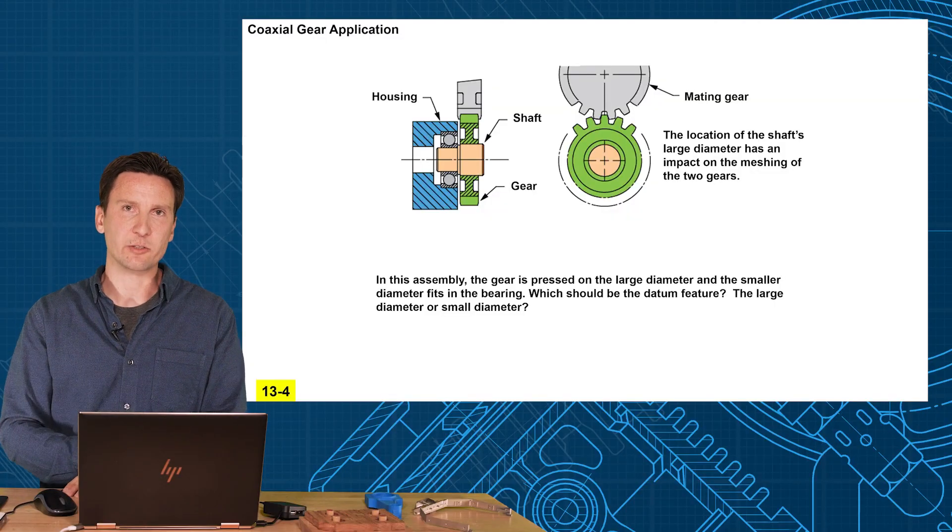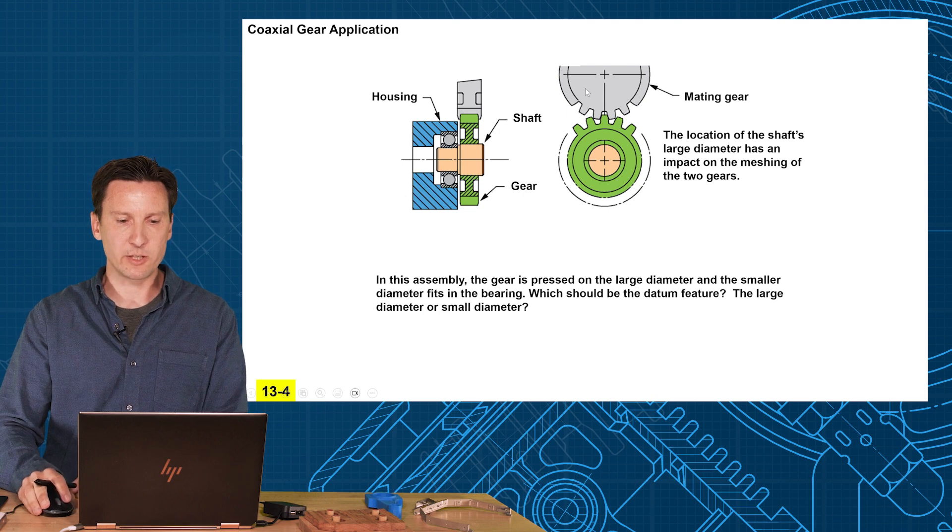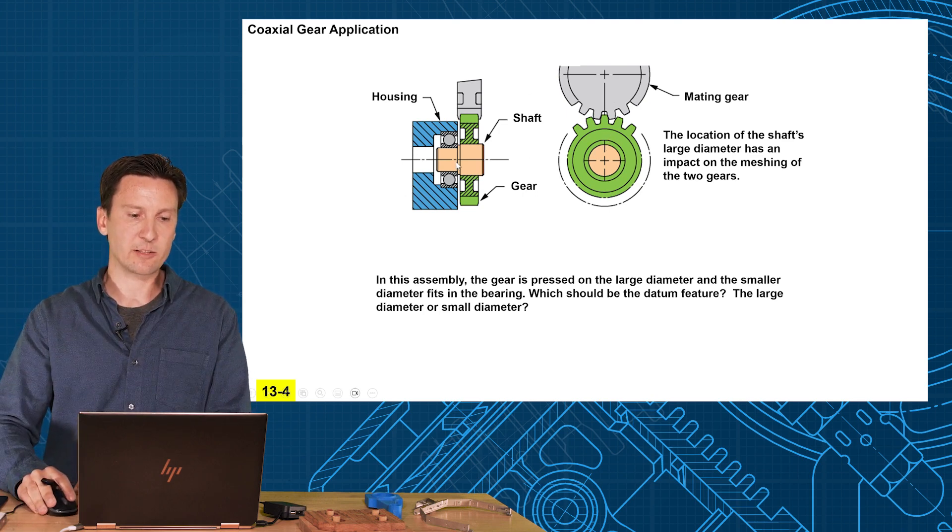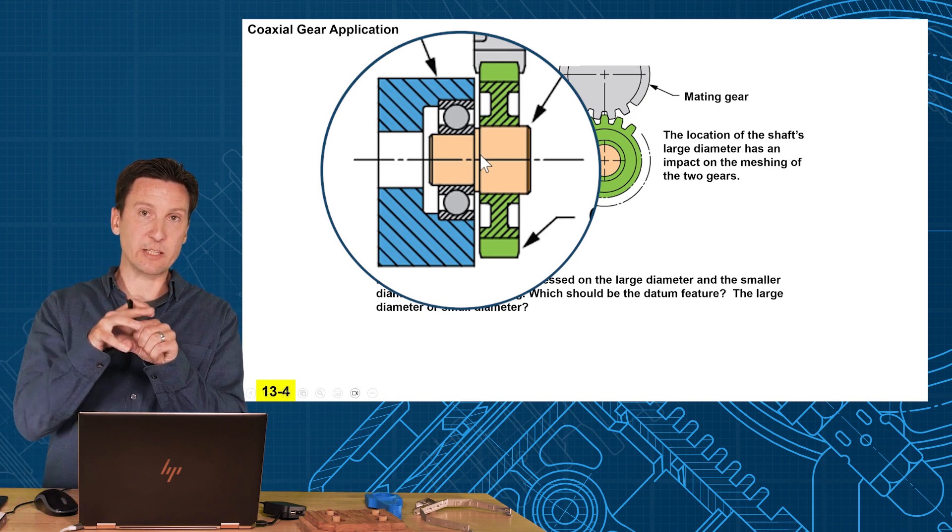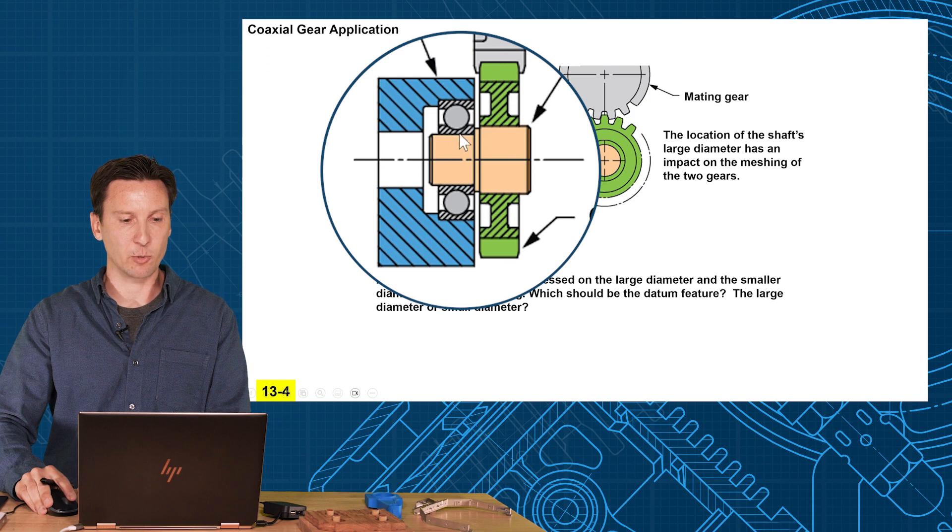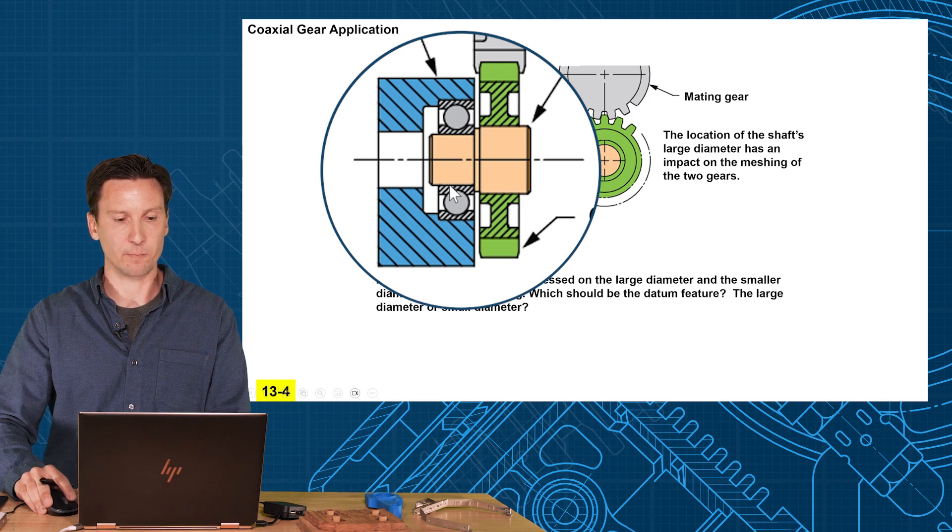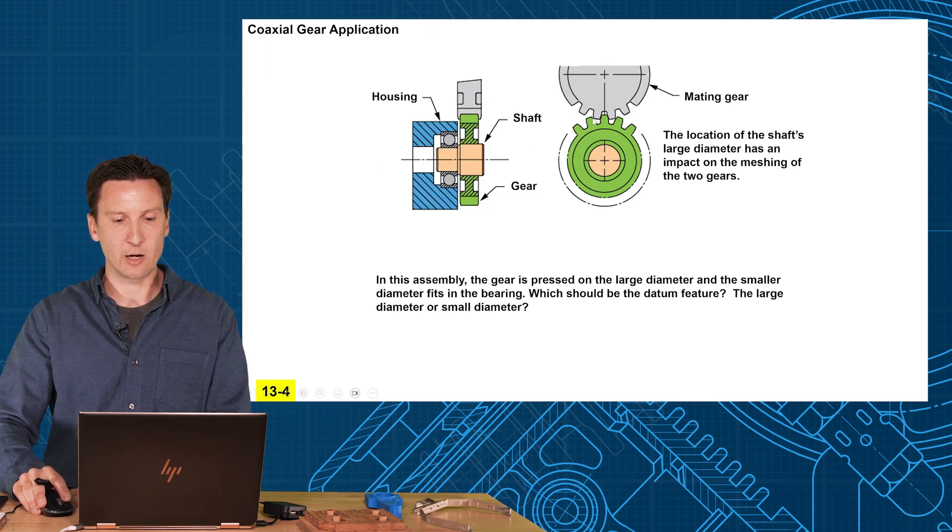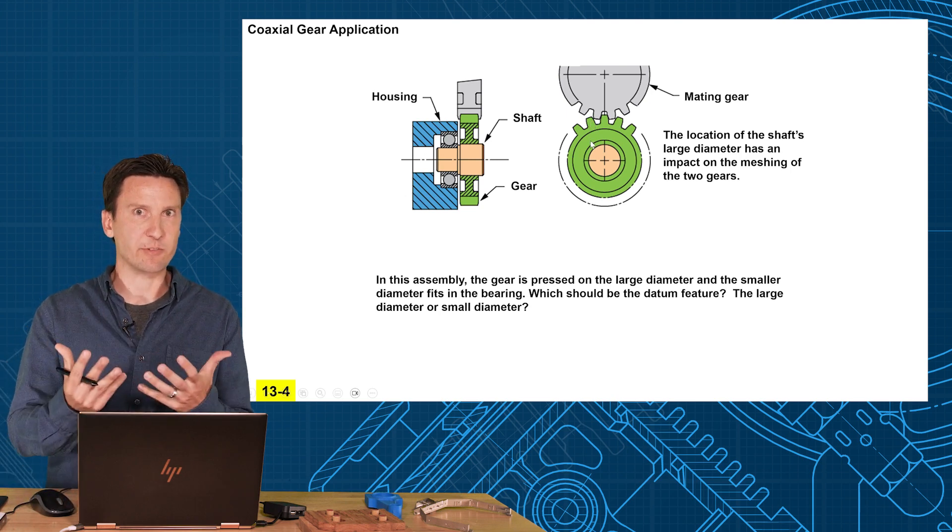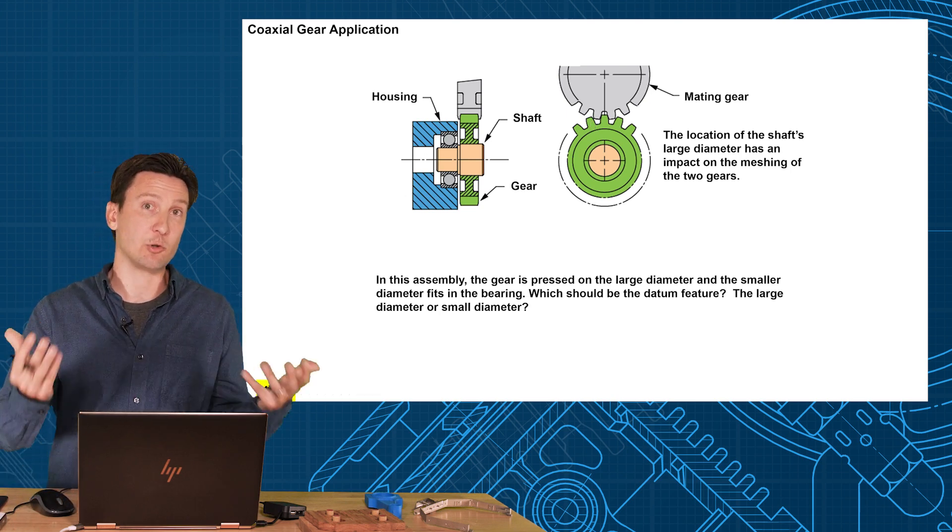So let's look at this coaxial gear application. We have two gears here, a gray gear and a green gear that have to mesh up with each other. So they take this orange shaft and they press the green gear onto the larger diameter. Then the smaller diameter is going to fit into a bearing which is in the housing here. So the part is going to be rotating and hopefully properly meshing up here. So first thing we have to decide is our datum feature. What should we select as datum feature A for this part?